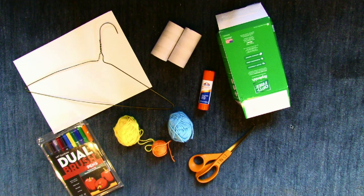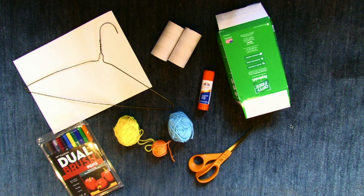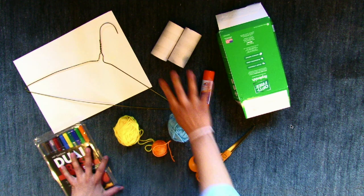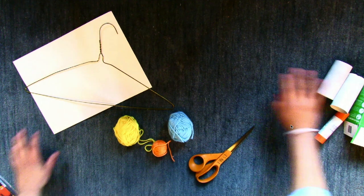Alrighty, in order for us to go ahead and get started, you are definitely going to need a clothes hanger, some recycled materials. I used some yarn to add some color to my hanger, a white piece of paper, some markers, some glue, and definitely some scissors.